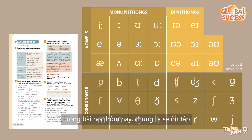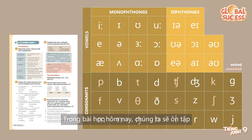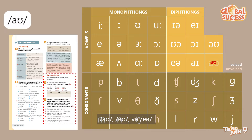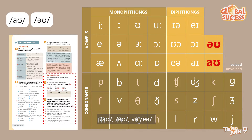In the lesson today, we will review three diphthongs that we have learnt in Tieng Anh Sao and Tieng Anh Be: /aʊ/, /oʊ/, and /eər/.